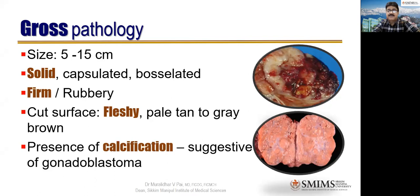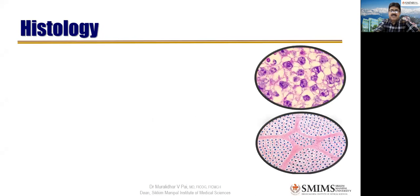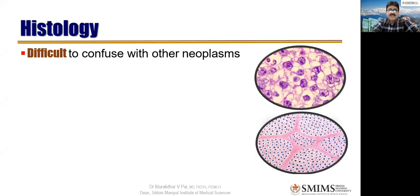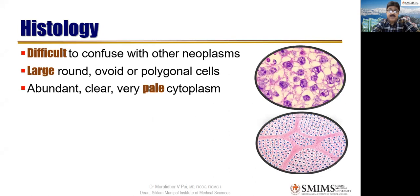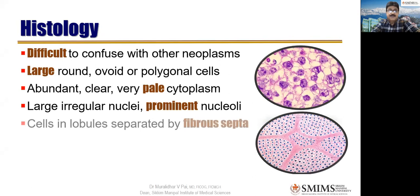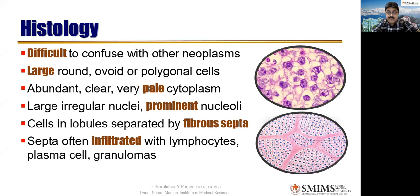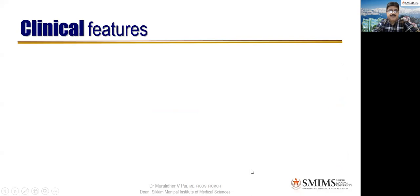Histology: difficult to confuse with other neoplasms. They are large, round, wide, or polygonal cells with abundant clear and very pale cytoplasm, large irregular nuclei, and prominent nucleoli. Cells are arranged in lobules separated by fibrous septa. Septa are often infiltrated with lymphocytes, plasma cells, and granulomas.